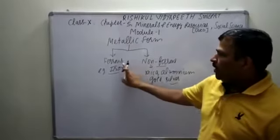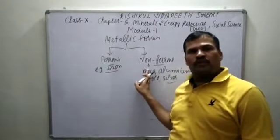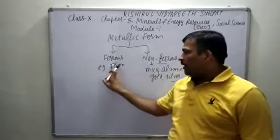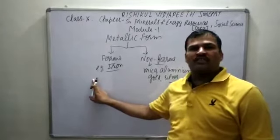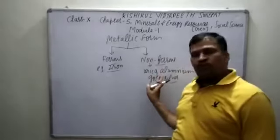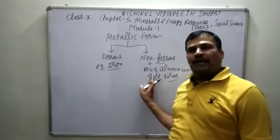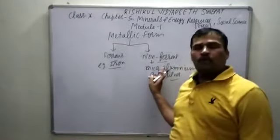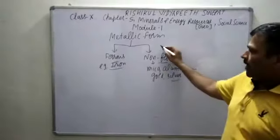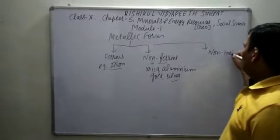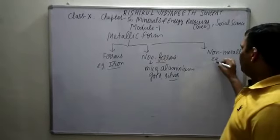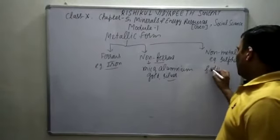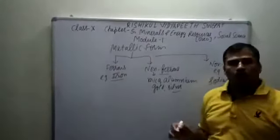To summarize the difference: ferrous means an iron component is present, while non-ferrous means absence of iron. Non-metallic minerals contain no iron at all — examples are sulfur and sodium. These are non-metals where no iron component is found.